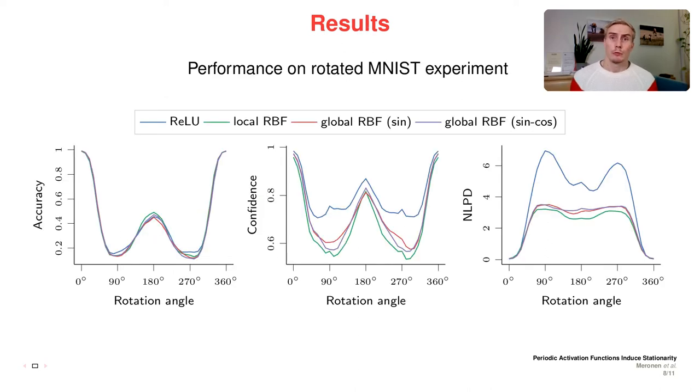Here we have a rotated MNIST digit experiment to observe model behavior under distribution shift. The models are trained with unrotated images and tested with images of different rotation levels. On the left, we can see that for all models, the accuracy is dropping rapidly as the rotation angle increases with the lowest accuracy at about 90 degrees rotation. This is expected behavior similar for all models. An ideal model would have its confidence drop as the accuracy drops to not be overconfident.